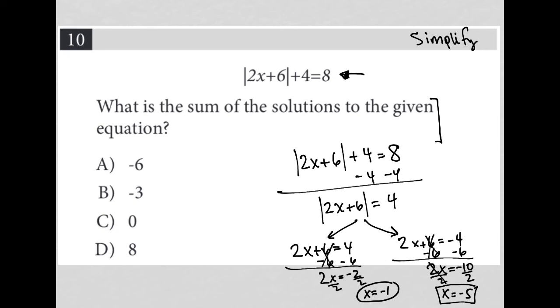So the question says, what is the sum of the solutions to the given equation? So my solutions are negative 1 and negative 5. The sum of those, just meaning what the solution is after you add them together, negative 1 plus negative 5 is negative 6. And therefore, the answer is choice A.